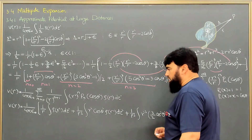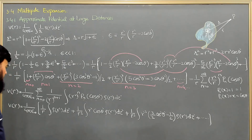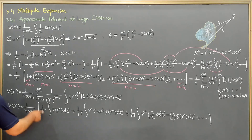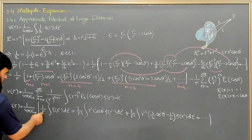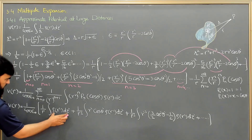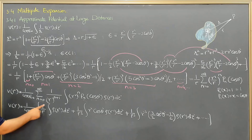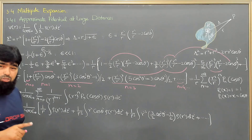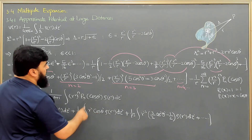This is what we call the multipole expansion. The n equals 0 term is the monopole term: the integral gives the total charge Q, so this term is (1/4π epsilon naught) times Q over r — exactly the monopole potential we derived earlier.